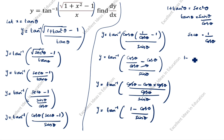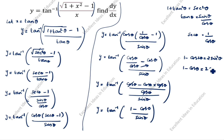Now we apply the half-angle identity. The formula is: 1 minus cos 2 theta equals 2 sin squared theta. We need only cos theta, so: 1 minus cos theta equals 2 sin squared of theta by 2. The 2 comes to the denominator.